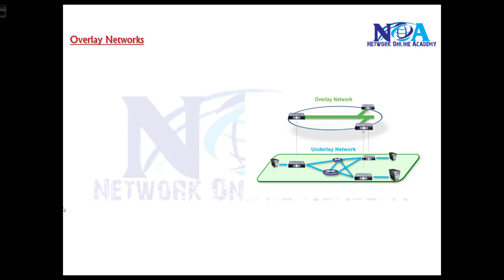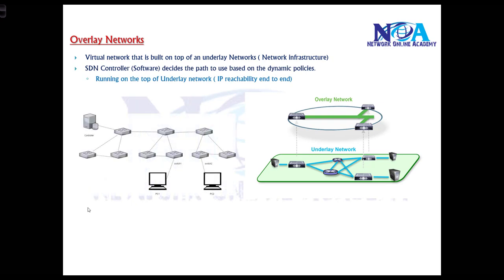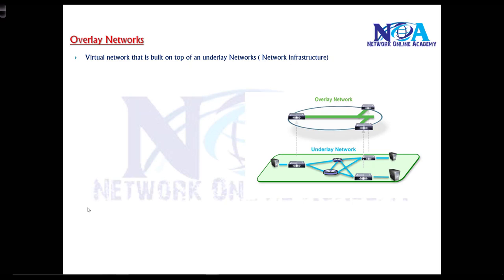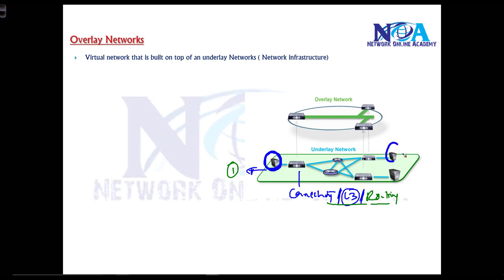The overlay network, by definition, is a virtual network built on top of your underlying network. In the underlay network, we provide connectivity by configuring all links as L3 links and running a routing protocol to provide end-to-end reachability. Once the underlay is set up and traffic is forwarded from one point to another, it uses one specific path — and that path is logically represented as your overlay network.